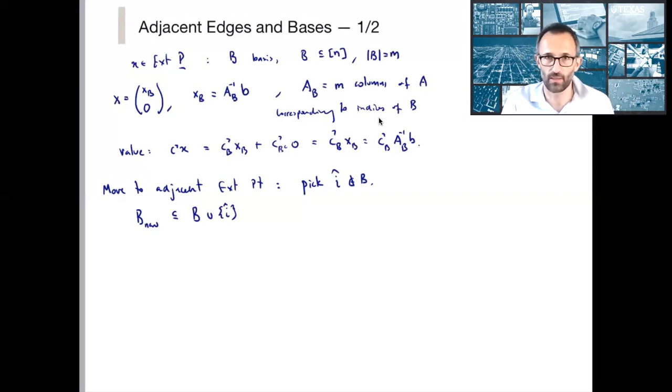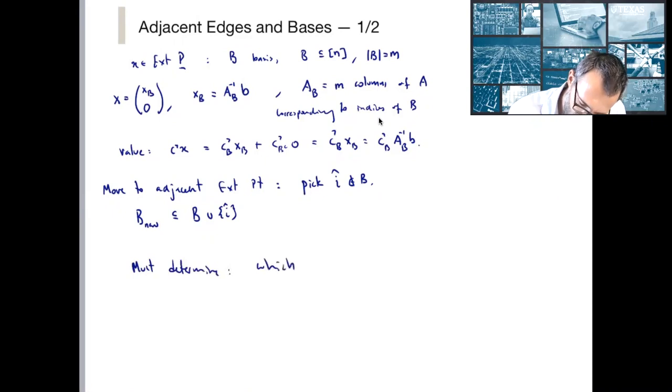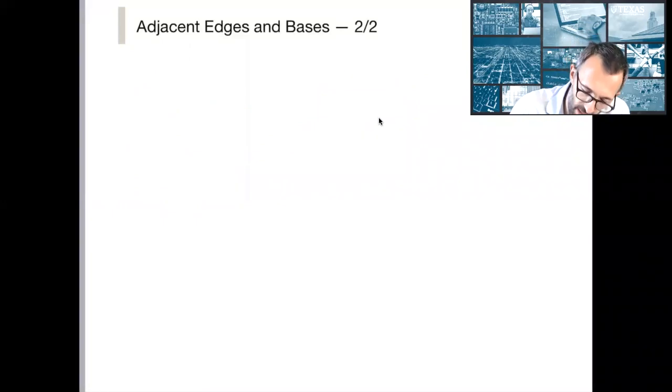Okay, so my new B definitely contains i hat. It contains nothing else that's not in B. So let me just write this out. B new is a subset of B old and this special i hat that I've chosen. And so I need to just throw out one of the things from B. And I'm going to figure out what my new basis is and also what my new solution is by making sure that I'm still satisfying all of my equality constraints.